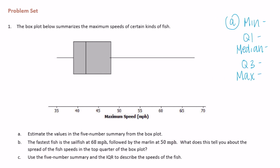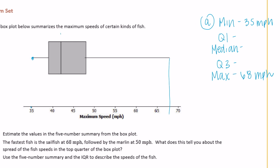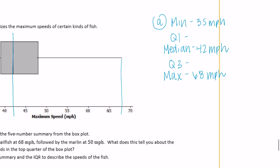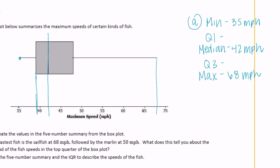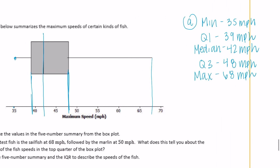Let's start with the min and the max. The minimum right there looks like it's 35 and the maximum is maybe 67 or 68 - let's go 68 miles per hour. The median, this middle number right here, is 42 miles per hour. Quartile one is right here at 39 miles per hour and quartile three is about 48. If you're off by one or two, we're just estimating.